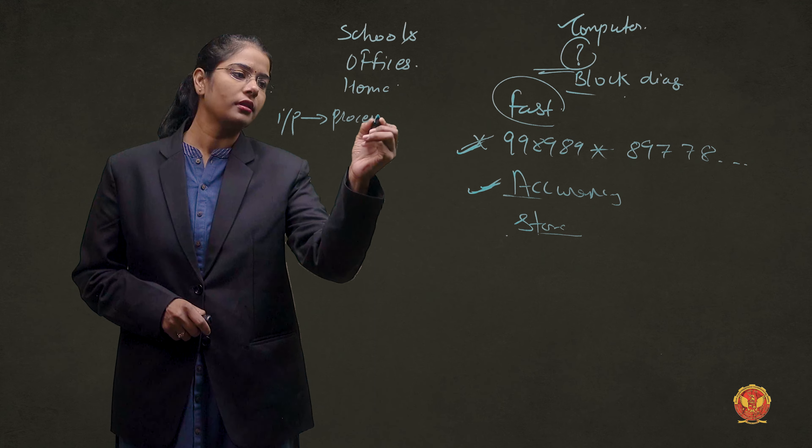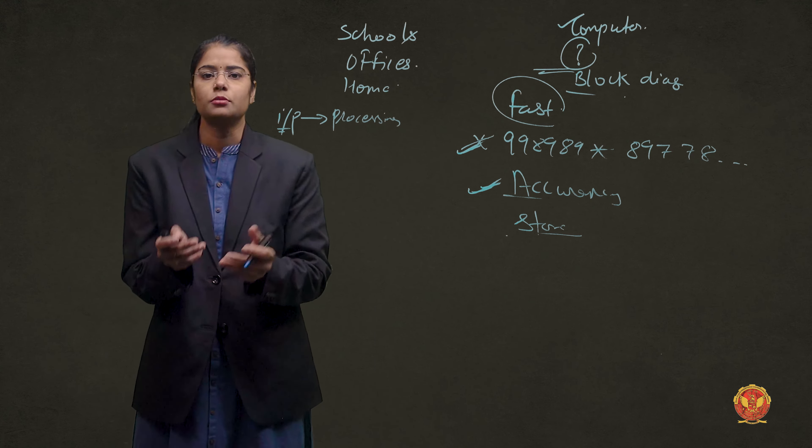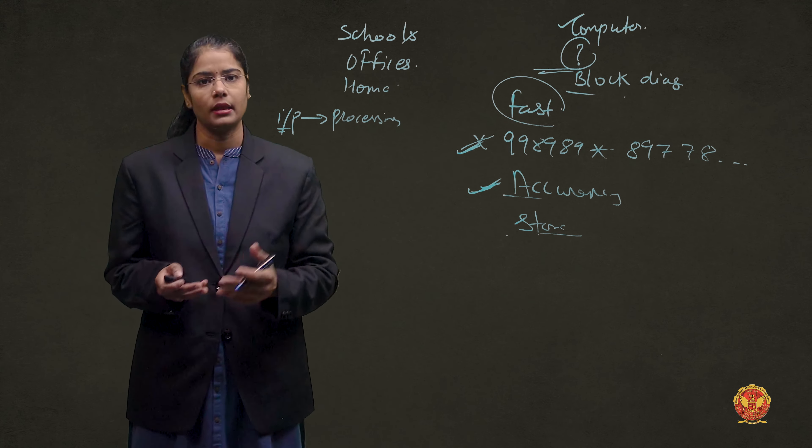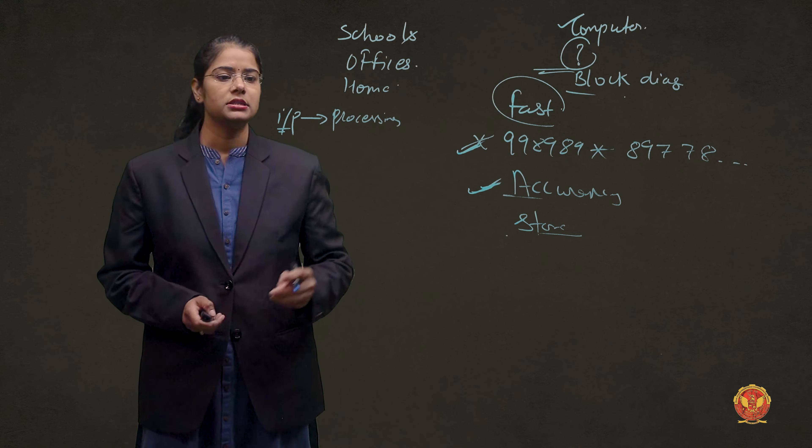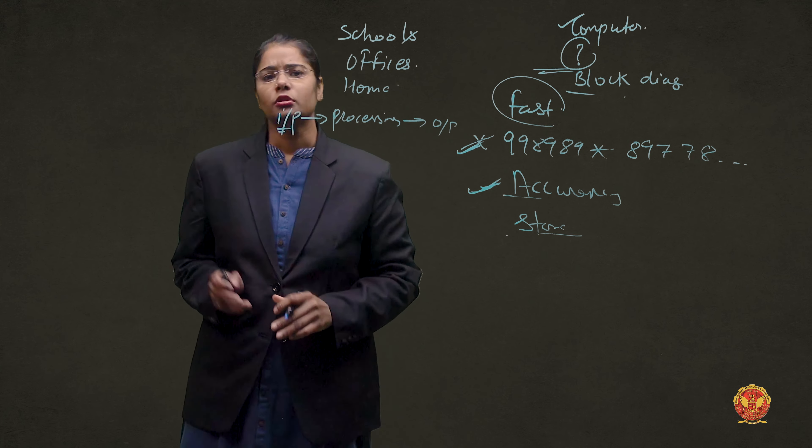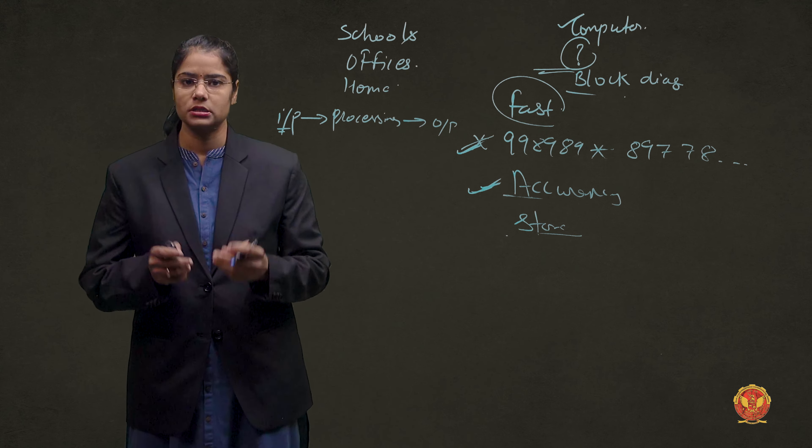After that, there is processing data. So, whatever data is used, if there is a manipulation or a calculation, then the processing is called manipulation and calculation. Once this input data is processed, we get an output. So, this is a simple sequence in our computer system.